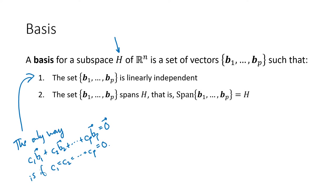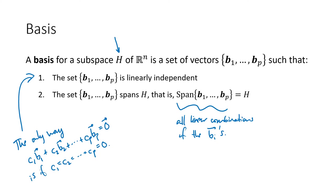The other condition is that the same set of vectors has to span that subspace. The span of that set is all linear combinations of these vectors — in this case the b's. So every vector in H can be written as a linear combination of these b vectors. If you have both of those conditions, then this set of vectors is called the basis.